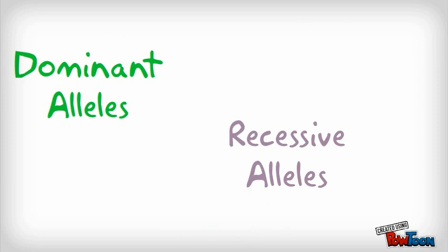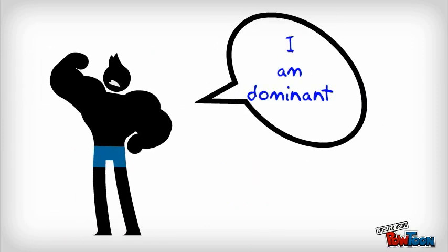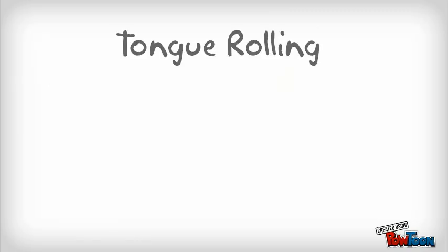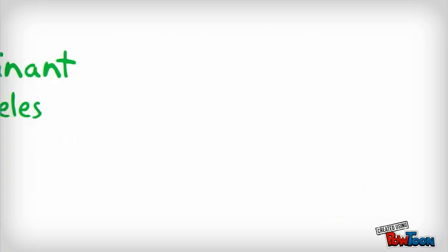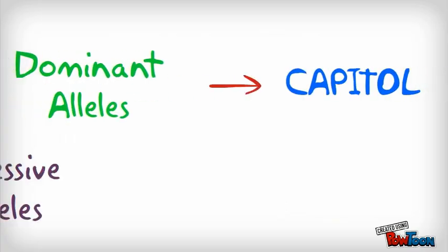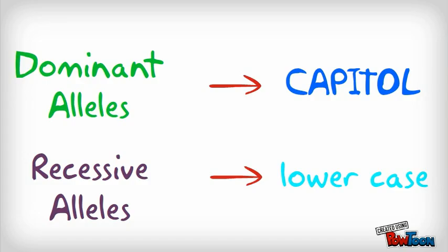It turns out that some alleles are dominant and some alleles are recessive. A dominant allele will overpower a recessive allele. In our tongue-rolling example, tongue-rolling is a dominant trait, and not being able to tongue-roll is a recessive trait. In genetics, we represent dominant alleles using a capital letter and we represent recessive alleles with a lowercase letter.